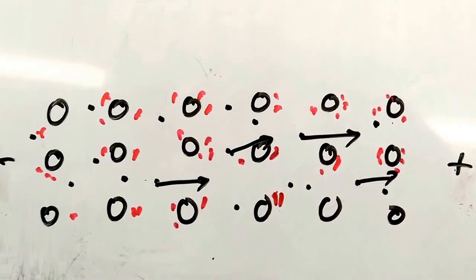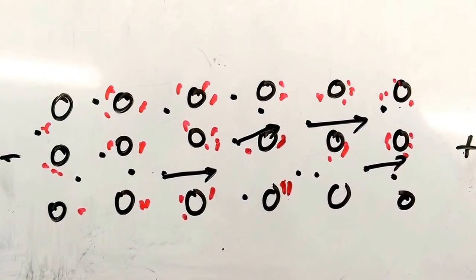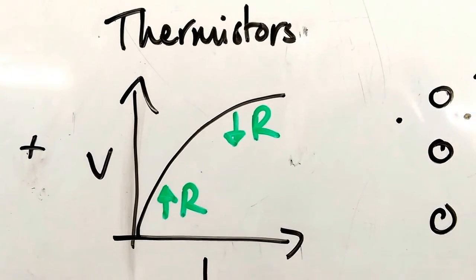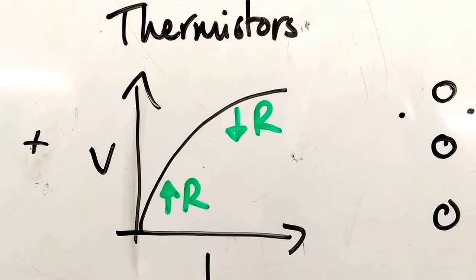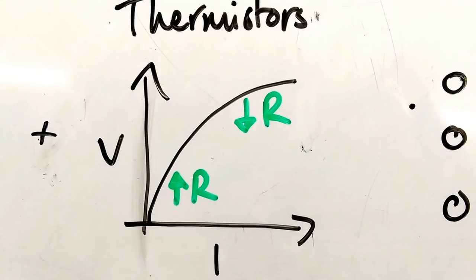The larger the current that flows, so you get that shape of graph. Not all conductors behave like that. Some conductors we call thermistors, and they behave in the opposite way. Actually, with a higher potential difference, a higher current, you end up with a lower resistance.